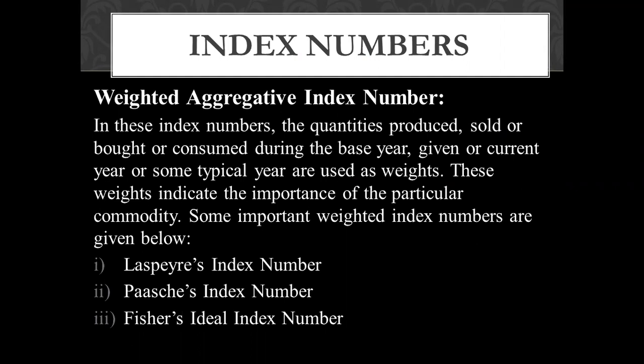In the weighted aggregative index number, there are several methods. We are talking about three methods of the weighted aggregative index number. We are talking about current year prices or typical year prices, current year or base year prices, and quantities or rates. We are talking about three index numbers.